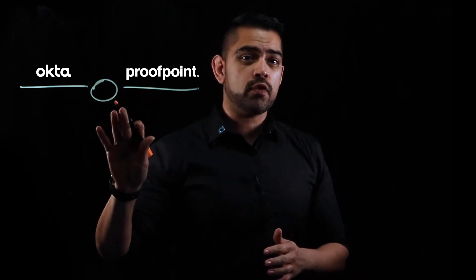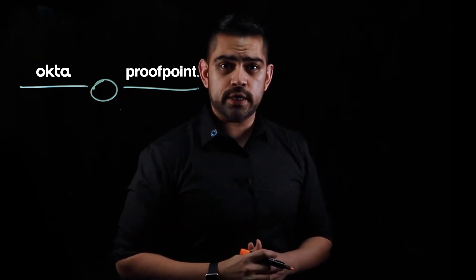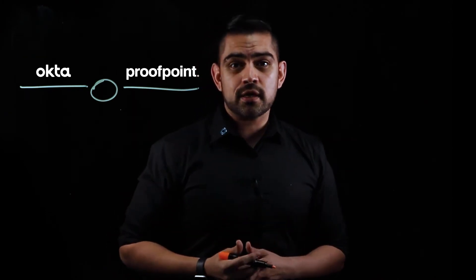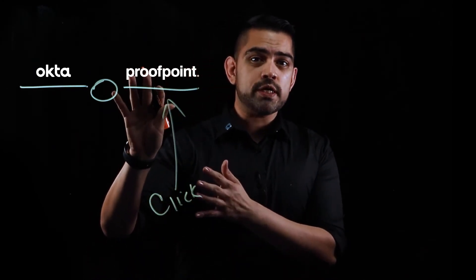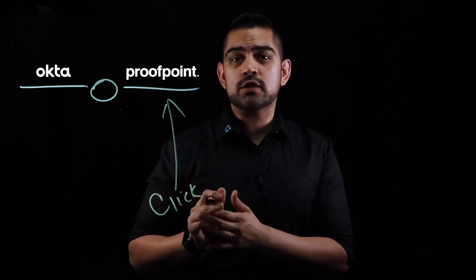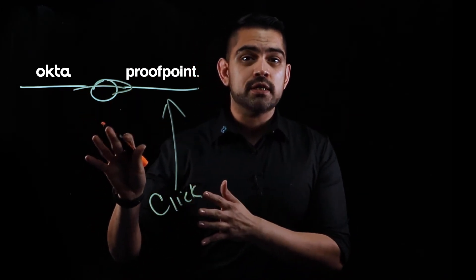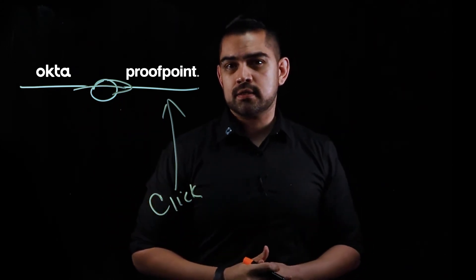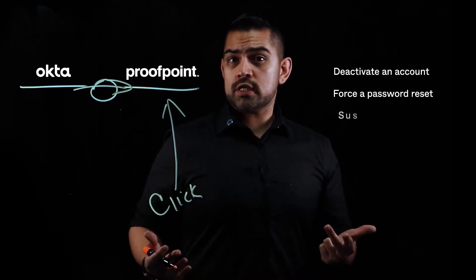We have Okta and we have Proofpoint. In between the two, we have a connector that lets us perform actions in Proofpoint and queries the TAP API every few minutes to check for a user who's clicked on a phishing link. So when a user clicks on a malicious link, Proofpoint collects that information, and Okta then pulls this list reading the user information. Using that information, Okta can perform a number of tasks — such as deactivate an account, force a password reset, or suspend an account.